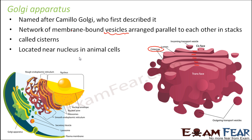It is located near the nucleus in animal cells. If this is your nucleus, just next to it you have your rough endoplasmic reticulum, which is connected to the smooth endoplasmic reticulum. Where the smooth endoplasmic reticulum ends, there the Golgi apparatus starts — so it is quite near to the nucleus.